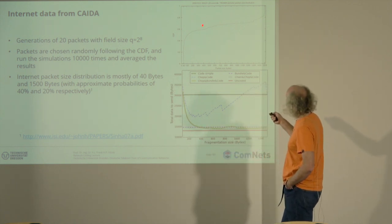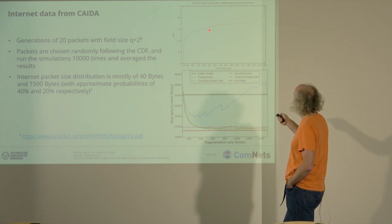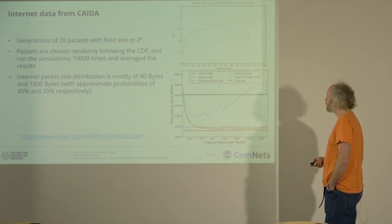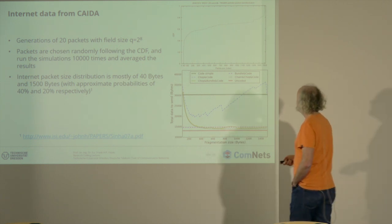This comes from the fact that you have here in this cumulative density function a little bit of a jump here. I think it's SMTP packets that are in this area.